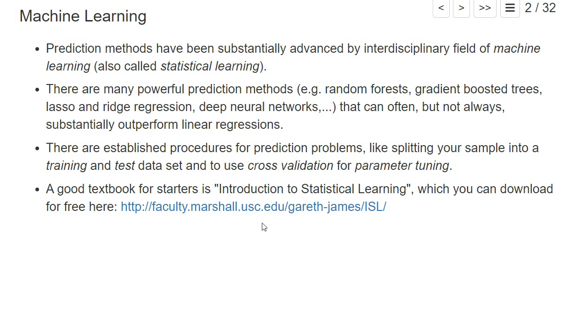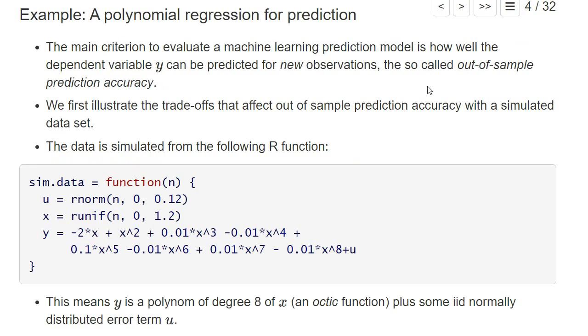The main criterion to evaluate a machine learning prediction model is the so-called out-of-sample prediction accuracy. This tells us how well the model is able to predict the dependent variable for new observations.